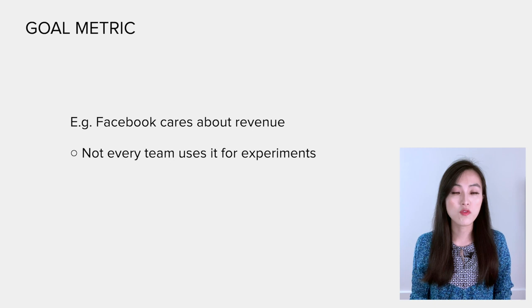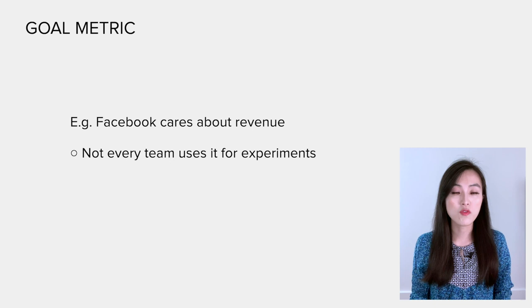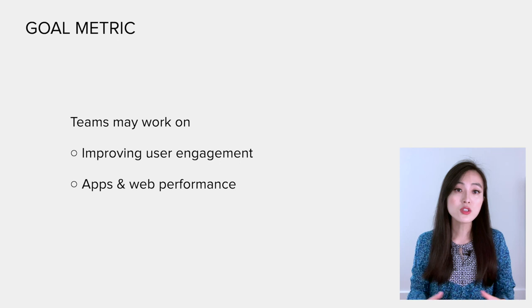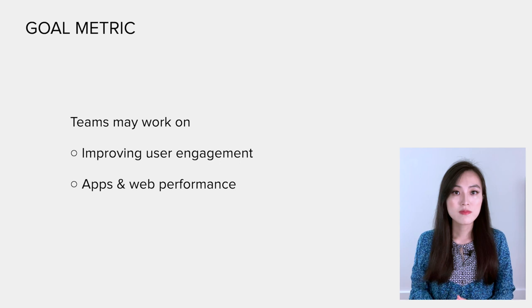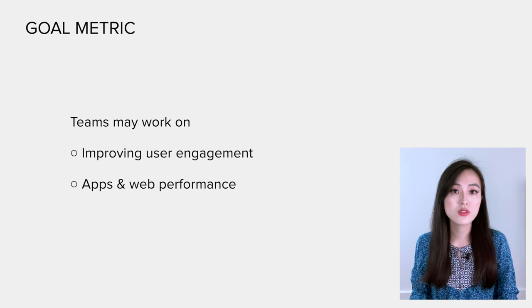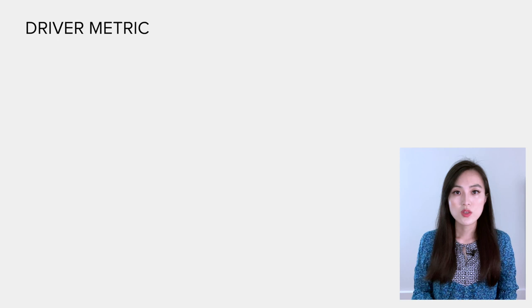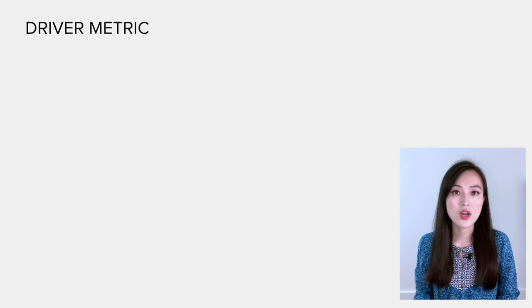For example, Facebook cares about ad revenue, but not every team could use it for A/B testing. There are teams focusing on improving user engagement and also teams focusing on website or native app performance. For such teams, what they do definitely contributes to the company's overall success, but they don't use those company-level goal metrics to measure performance.